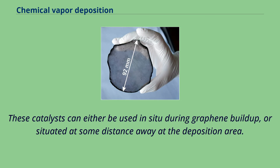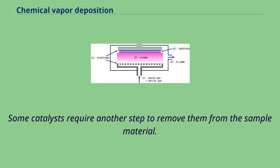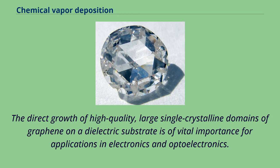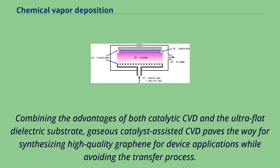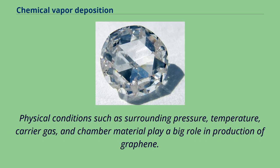The direct growth of high-quality, large single crystalline domains of graphene on a dielectric substrate is of vital importance for applications in electronics and optoelectronics. Combining the advantages of both catalytic CVD and the ultra-flat dielectric substrate, catalyst-assisted CVD paves the way for synthesizing high-quality graphene for device applications while avoiding the transfer process. Physical conditions such as surrounding pressure, temperature, carrier gas, and chamber material play a big role in production of graphene.